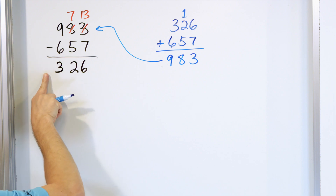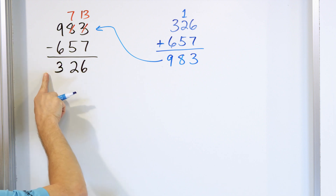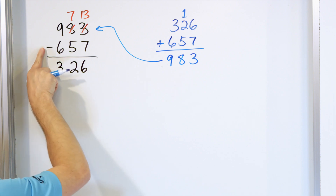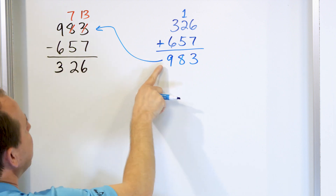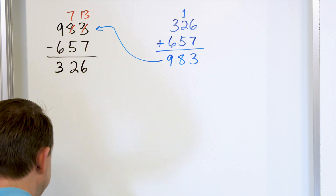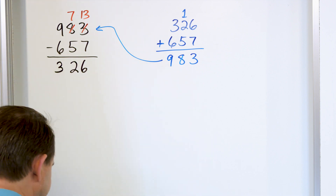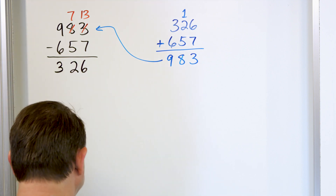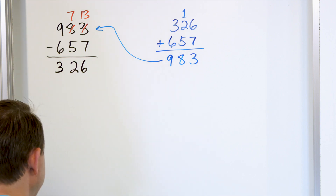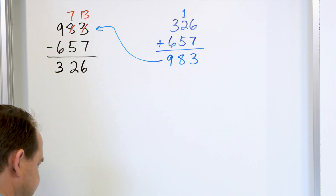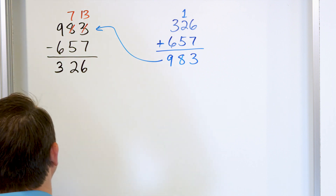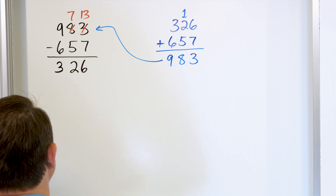We subtracted to get the smaller number, but then when we add this back in, we get back up to the number we started with. So every problem will be that way — we do the subtraction first and then we add back in and we should get back to what we started with.